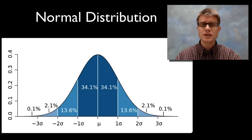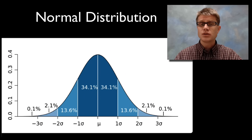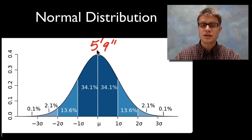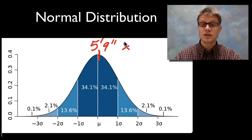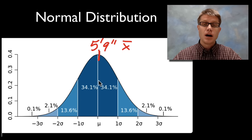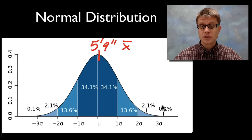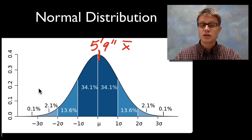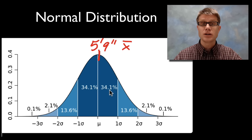First of all, what is it? To understand standard deviation you have to understand the normal distribution. It's a bell shaped curve. In the United States most men are about 5 foot 9 — that's the average, the mean, or in statistics that's the x-bar. There's going to be a lot of men who are taller than that and a lot who are shorter. The standard deviation is going to measure the spread or the variation in this bell shaped curve.